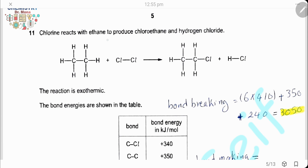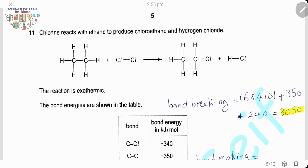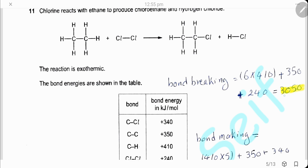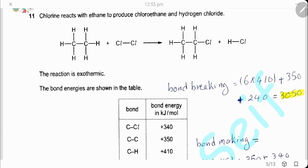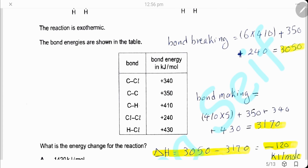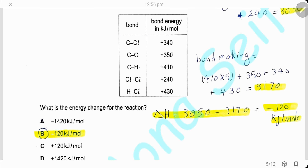Question 11. Chlorine reacts with ethane to produce chloroethane and hydrogen chloride; the reaction is exothermic. Energy needed for bond breaking: five C–H bonds, one C–C bond, and one Cl–Cl bond totals 3050 kJ/mol. Energy released for bond making: five C–H bonds, one C–C bond, one C–Cl bond, and one H–Cl bond totals 3170 kJ/mol. Delta H = 3050 − 3170 = −120 kJ/mol. The answer is B.